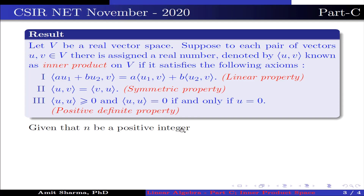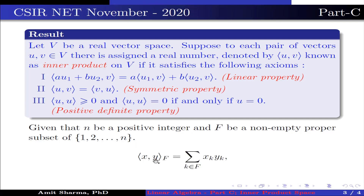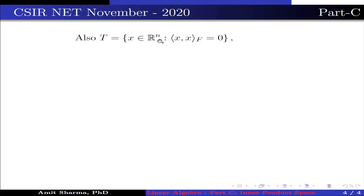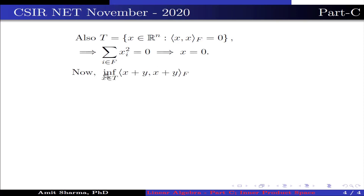Given that n is a positive integer and f is a non-empty proper subset of {1, 2, ..., n}, the inner product ⟨x, y⟩ over f equals summation over k in f of xk times yk, where x = (x1, x2, ..., xn) and y = (y1, y2, ..., yn) belong to R^n. Also, T is the set of x in R^n such that ⟨x, x⟩ over f is 0. This implies summation over i in f of xi squared equals 0, which further implies xi = 0 for all i in f. Now, infimum over x in T of ⟨x+y, x+y⟩ over f equals infimum over x in T of ⟨y, y⟩ over f, because x = 0, which equals ⟨y, y⟩ over f.